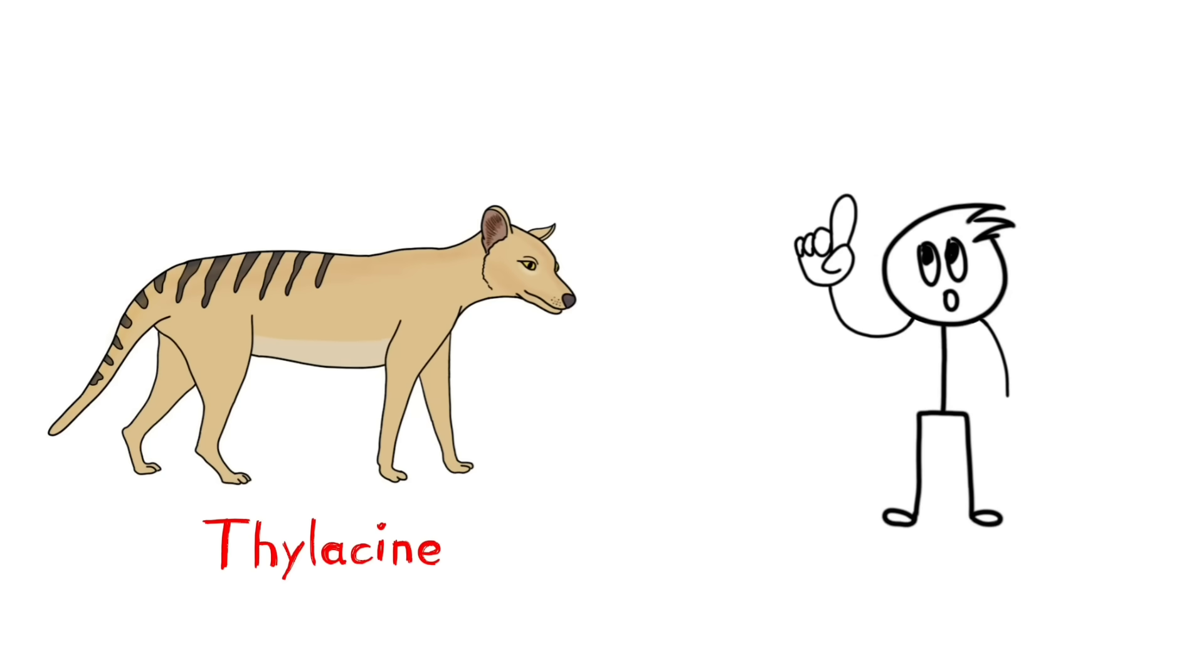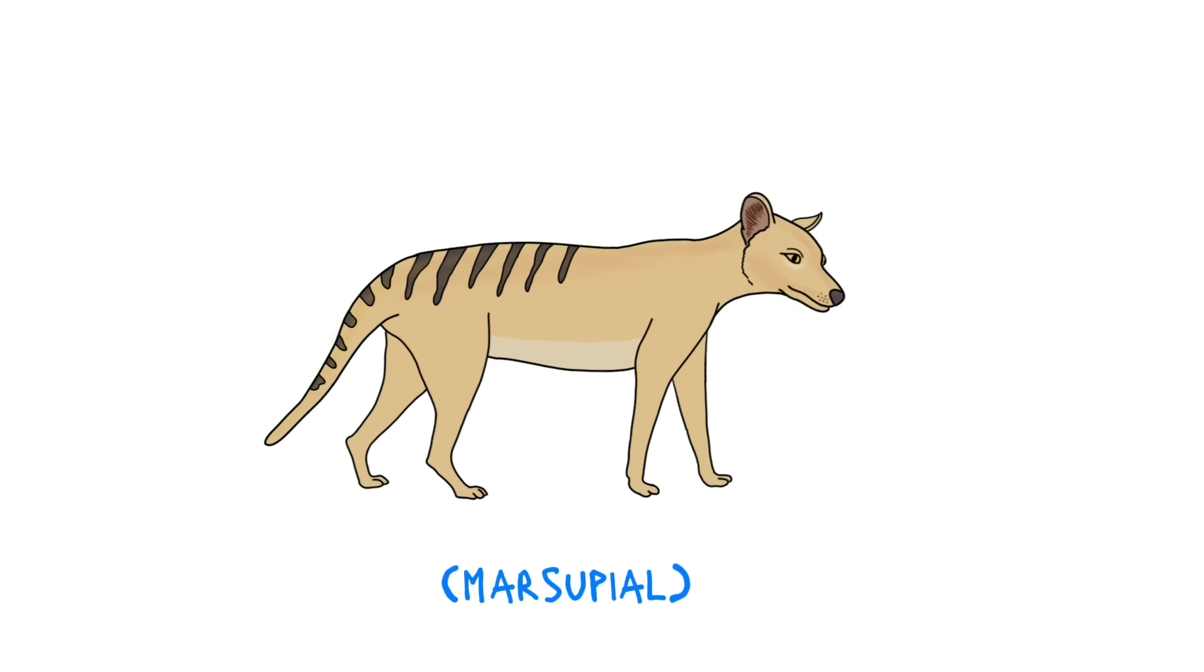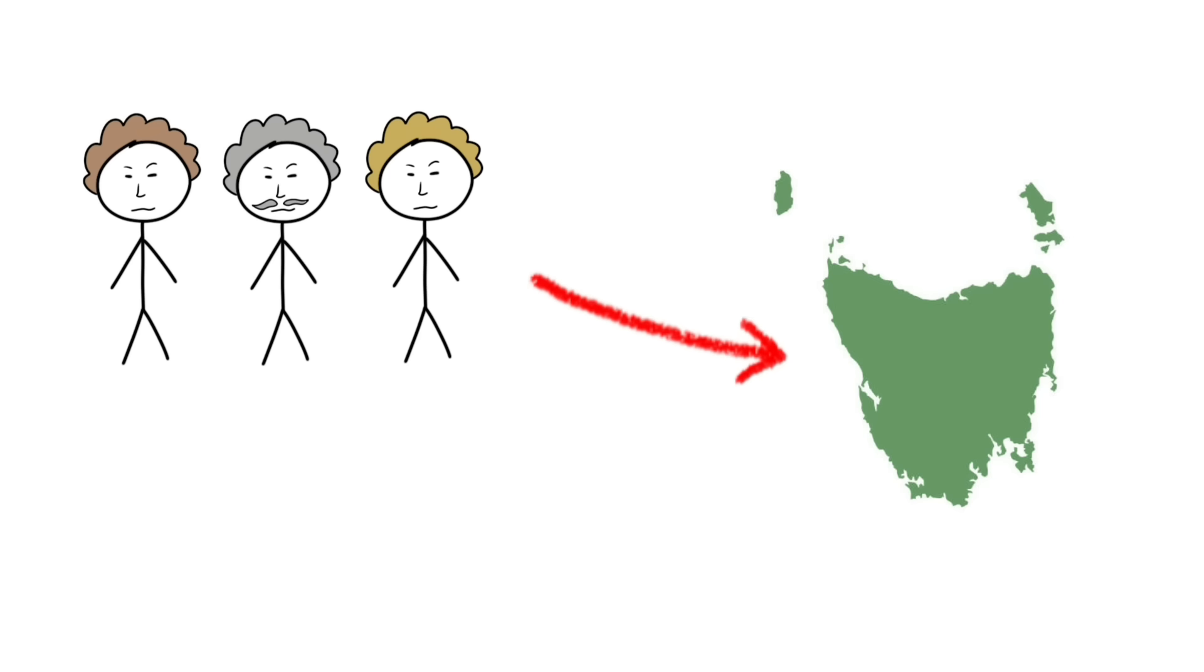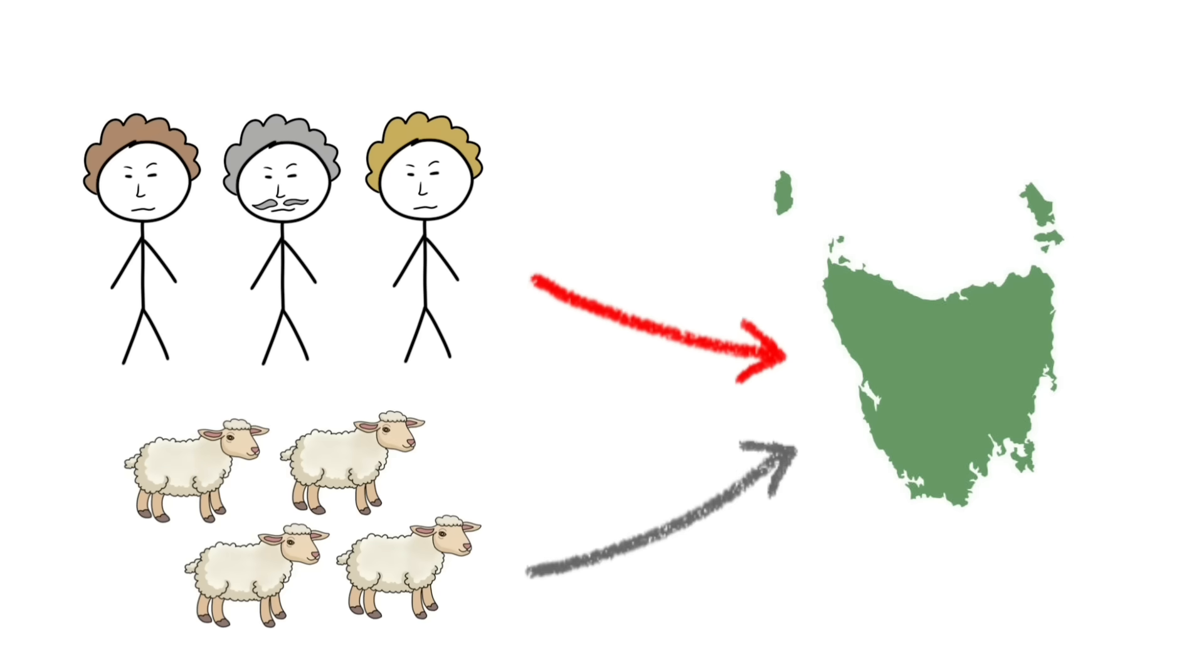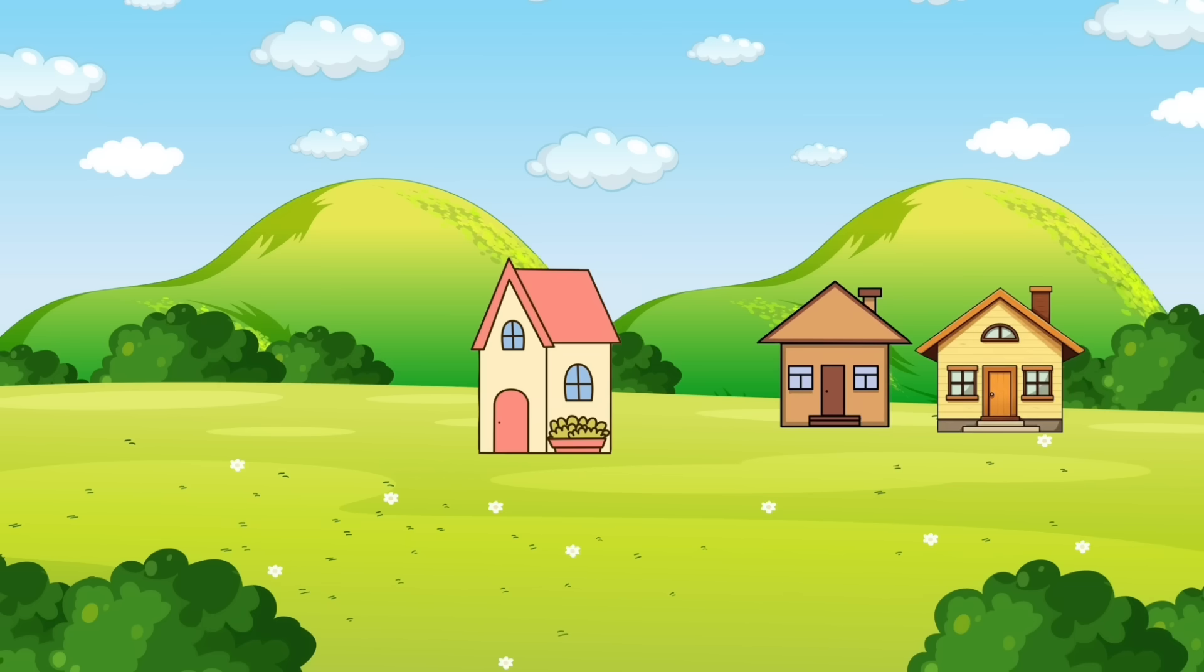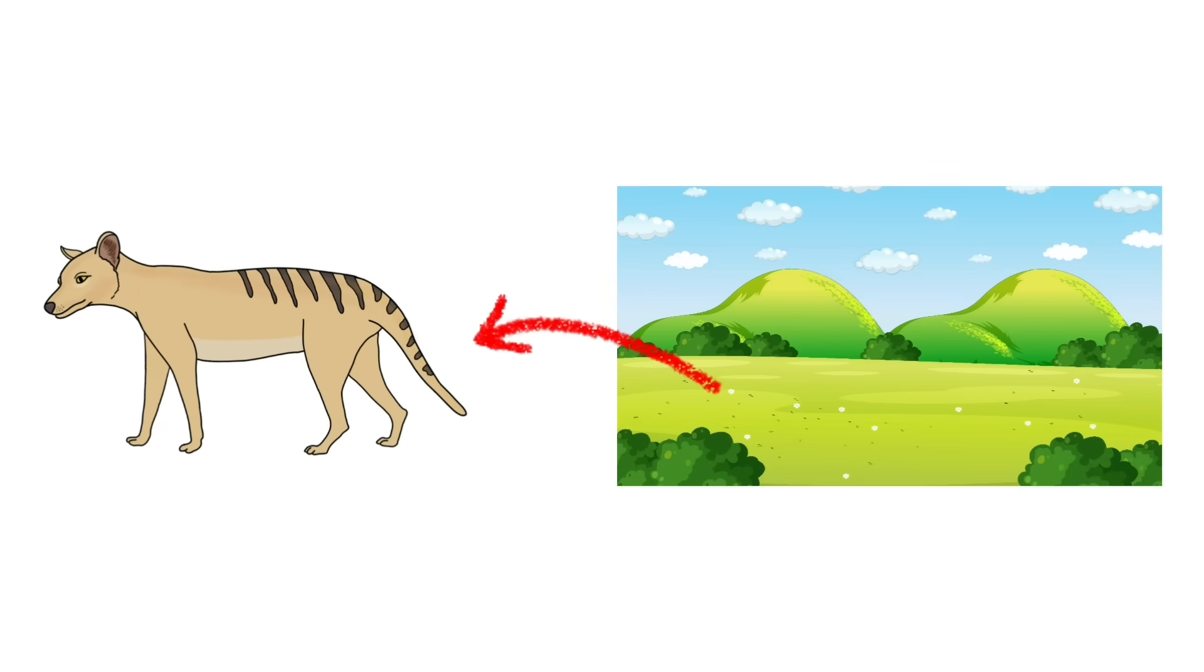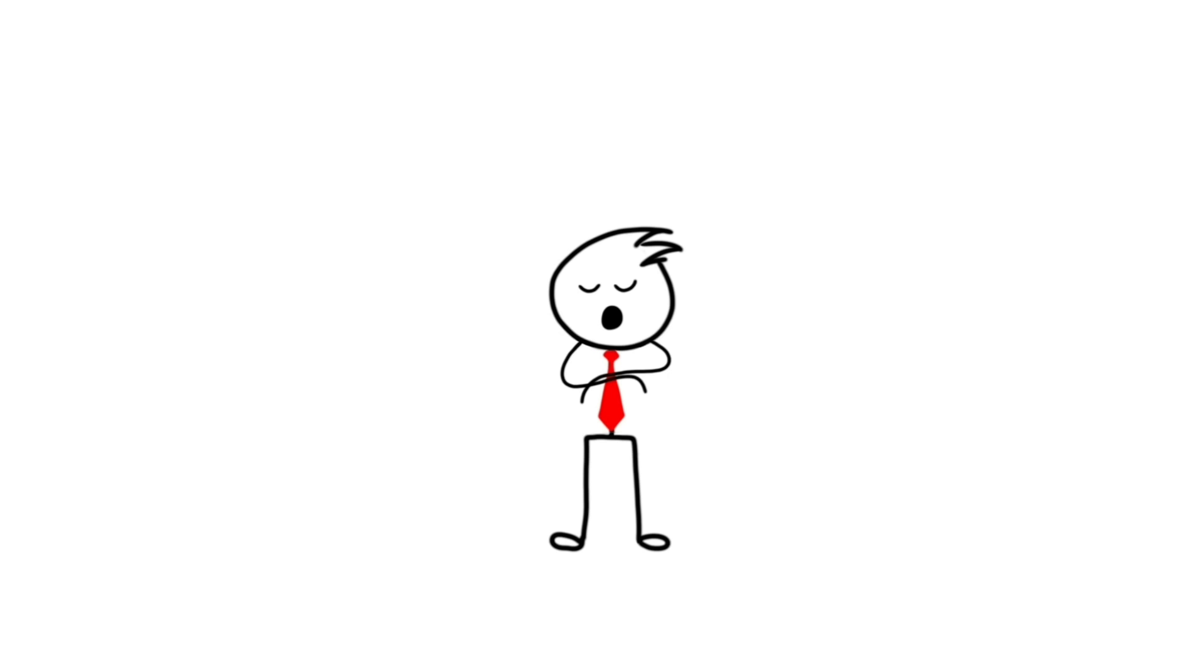This is a thylacine. You may better know it as a Tasmanian tiger. These marsupials were the apex predators of Tasmania and were living a happy life. Then, the humans appeared, and they brought sheep with them. They started their settlements and occupied the habitat of Tasmanian tigers. The sheep farm expanded, and thylacines were forced to stay away from their natural habitats.